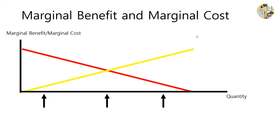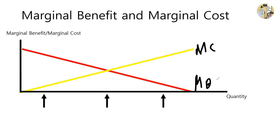The first concept that we have to understand in today's video is the marginal benefit and marginal cost. Below you can see a table about the marginal benefit and the marginal cost. One line is sloped upwards and one line is sloped downwards. Now many are confused about this — why is the marginal benefit decreasing as the quantity increases? But this is actually common sense and can be solved by a simple situation.